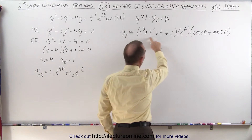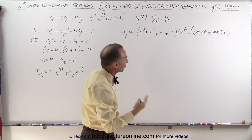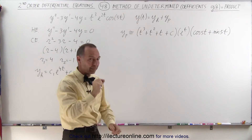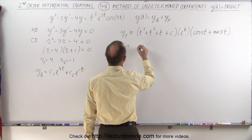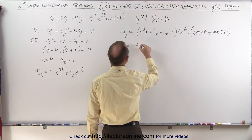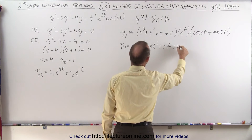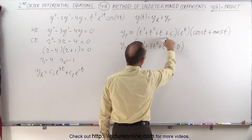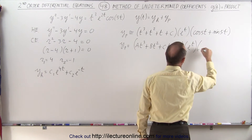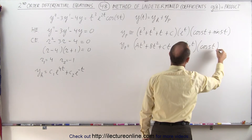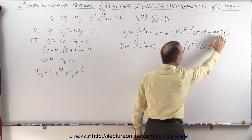When you notice that there are four terms in the polynomial and two trig terms, when we multiply everything out we're going to get eight separate terms, which means we're going to need eight separate coefficients. So y particular is going to be equal to: a t cubed plus b t squared plus ct plus d, multiplied times e to the t and times cosine of 5t. And then we have to do it again with a different set of coefficients, multiplying times the sine of 5t.